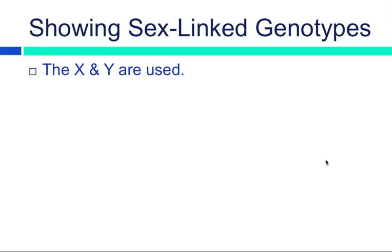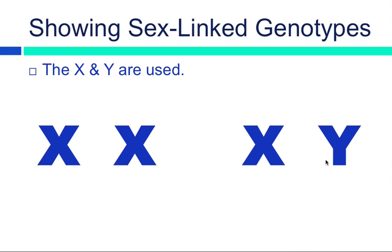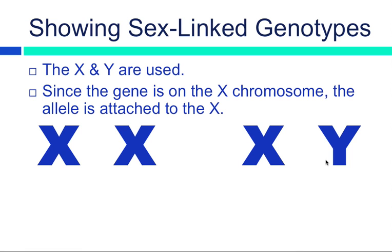So here's how we're going to show sex-linked genotypes. We're going to use the letters X and Y, male, female. Obviously females, we're going to use two Xs. Males, we're going to use an X and a Y. But since the gene is only located, the allele is only located on the X chromosome, the allele we're actually going to attach to the X. We're going to write it like an exponent.